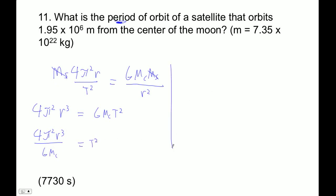And then I can take the square root of both sides. So the square root of this, the four pi squared comes out. You get 2 pi square root of r to the third over G mc.